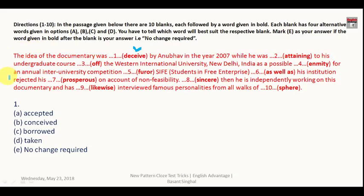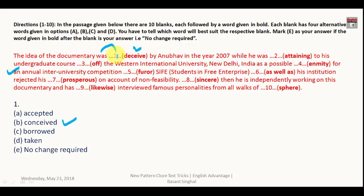The idea of the documentary was conceived by Anubhab in the year 2007. The word given is 'deceived', but deceive means to cheat someone, which is totally inappropriate here. The correct word is 'conceived' because an idea is always conceived in your mind first before it materializes. Since this is followed by 'was', you need the third form of the verb — 'conceived' — which is given in option B.